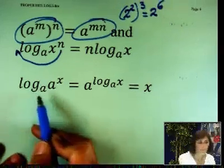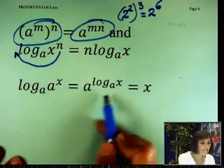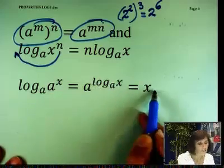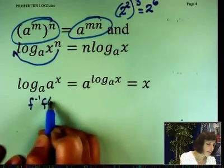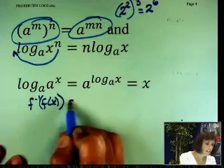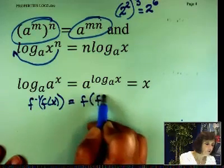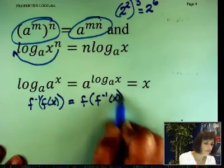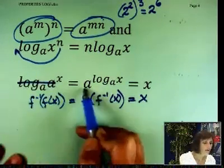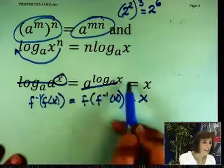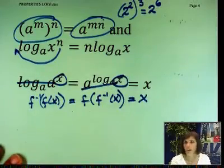And of course, the inverse property. Log base A of A to the X is X, and A to the log base A of X is X. This means F inverse of F of X is F of F inverse of X. And we did that in the first section. So these 2 are very powerful. You'll get X.